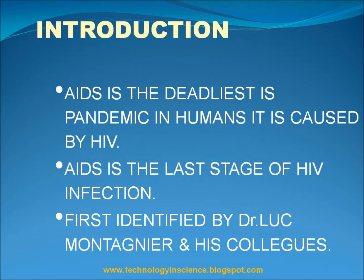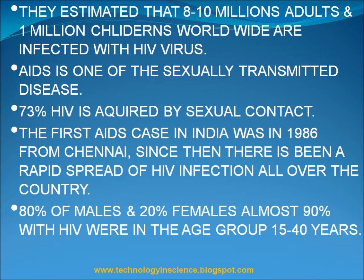AIDS was first identified by Dr. Luc Montagnier and his colleagues. It is estimated that 8 to 10 million adults and 1 million children worldwide are infected with HIV. AIDS is one of the sexually transmitted diseases, with 73% of HIV acquired by sexual contact.